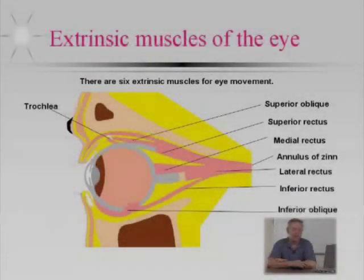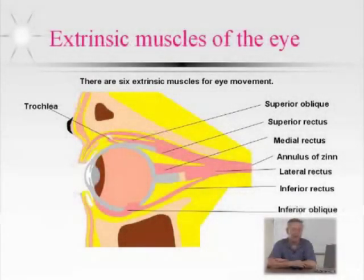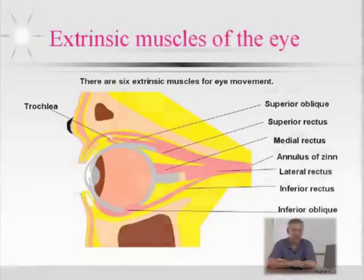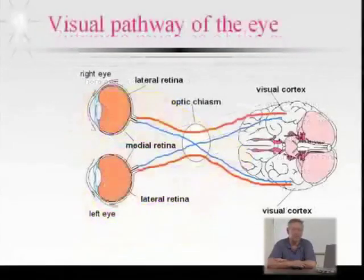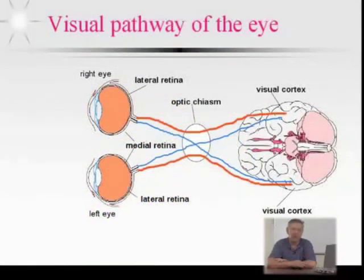The next area that we need to have some kind of a concept of how it actually functions is the visual pathway. The visual pathway is actually the optic nerve and how things get from the eye to the brain.